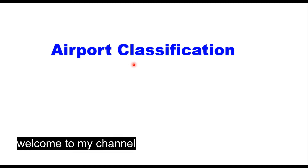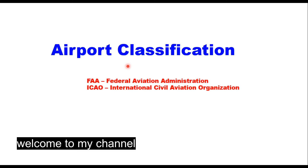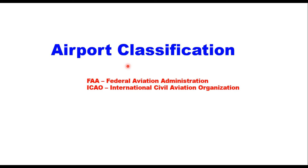Hello friends, today we will discuss airport classification. There are two international agencies which standardize the design of airports, particularly the air side like runway, taxiway, and apron, throughout the world. These are the FAA — Federal Aviation Administration, the agency of the United States of America — and ICAO, the International Civil Aviation Organization, which is a specialized agency of the UN. These two agencies classify airports in different categories based on certain criteria.